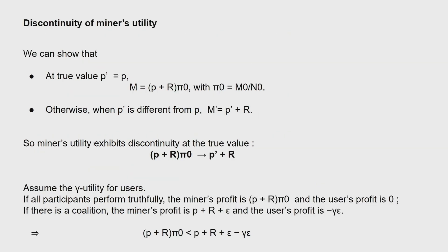The most important and interesting thing is that you have some sort of discontinuity for the miner's utility. By a Markov argument, you can show that for P-prime equal to P — meaning everyone in the system is honest — the utility is P plus R times pi-zero, where pi-zero is the initial share of this miner. Otherwise, if you deviate, the utility is P-prime plus R. There is a discontinuity due to the term pi-zero: you are changing from P plus R times pi-zero to P-prime plus R.